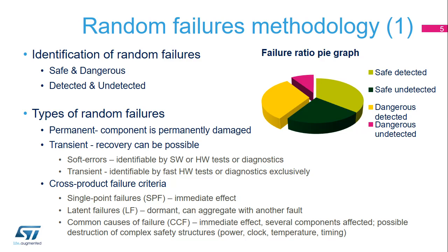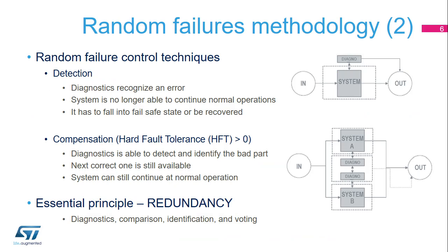Software tests can never compensate for these temporary and short-lived errors efficiently, as they are considerably slower and limited by their execution time. From a cross-product point of view, using ISO 26262 terminology, we can recognize single-point, latent, or common types of failure causes. Common causes of failure require a special focus, especially as they can potentially destroy even quite complex safety structures. When random failures are detected and cannot be compensated for, especially after a dangerous error is detected, the system has to be stopped and placed into a safe state, or go through a recovery process like reset, rollback, or a specific check function.